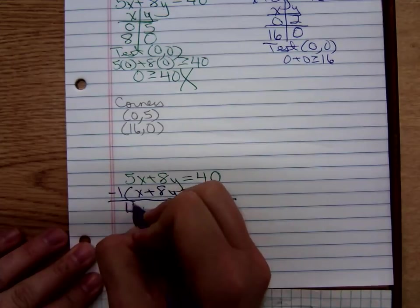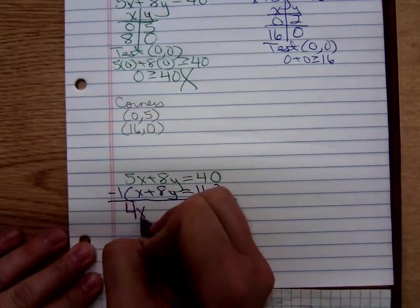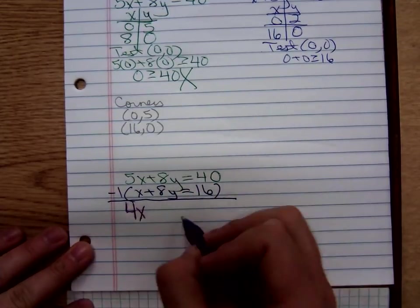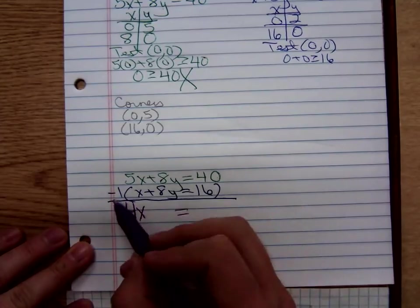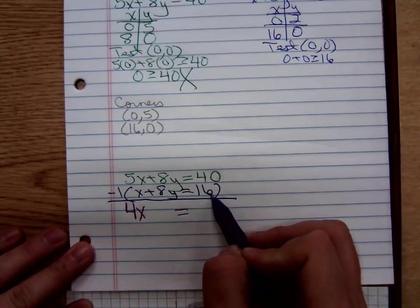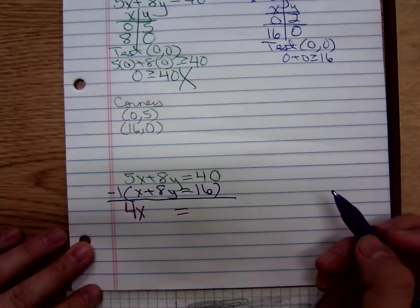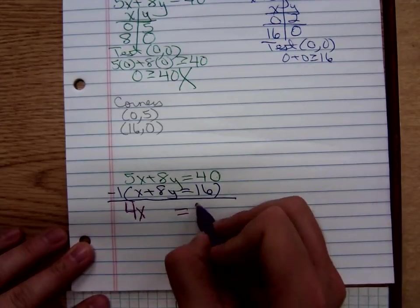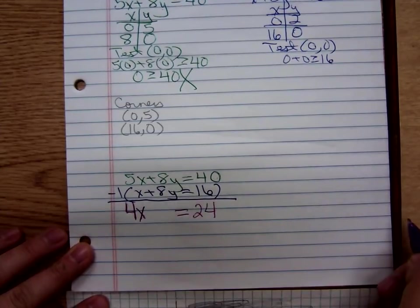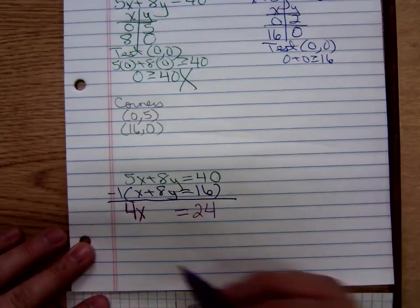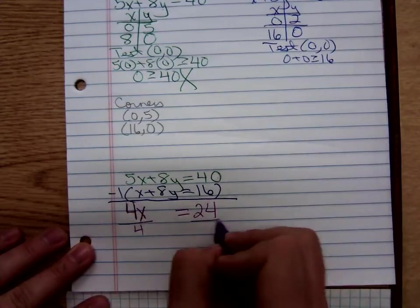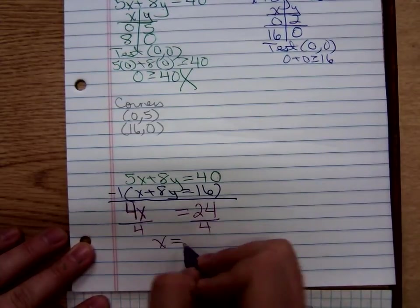So, I have a 4x. What's about to happen to the y's? That's a 40. That would become a minus 16. 40 minus 16 gives me 24. Divide both sides by 4 to give me x equals 6.